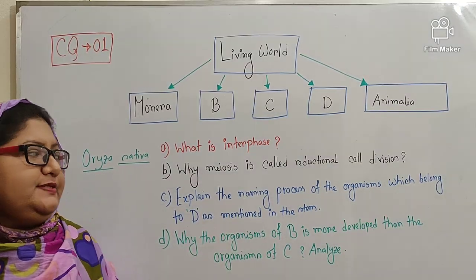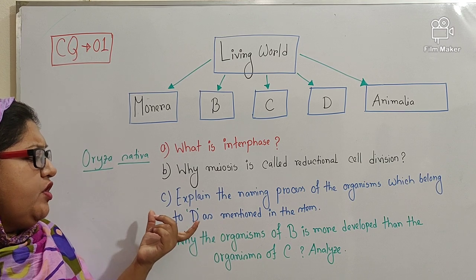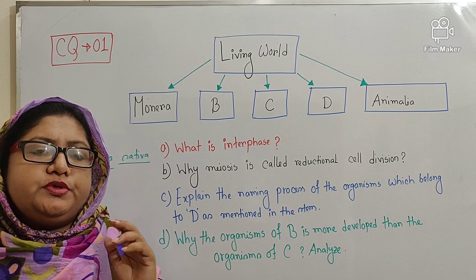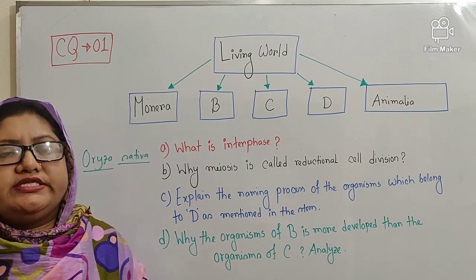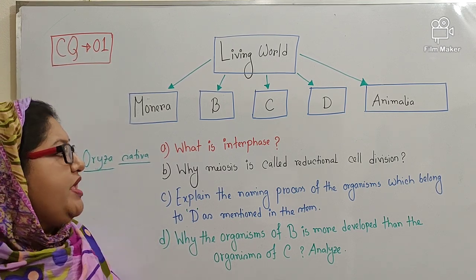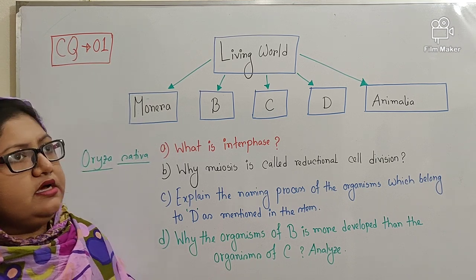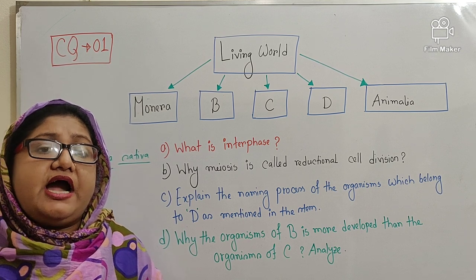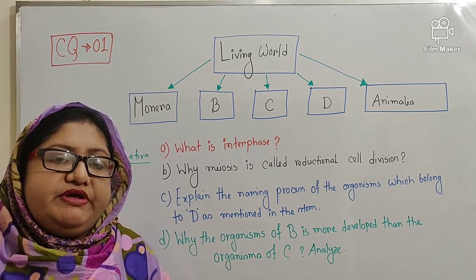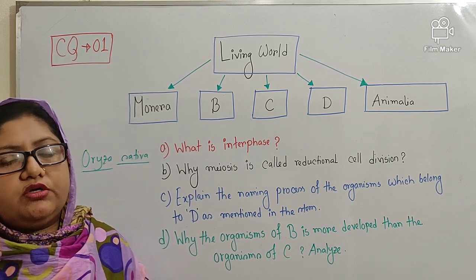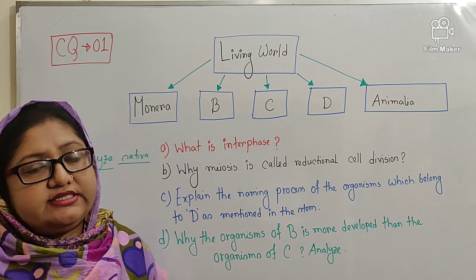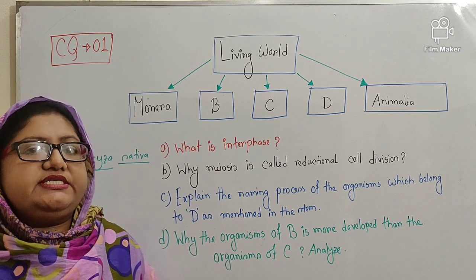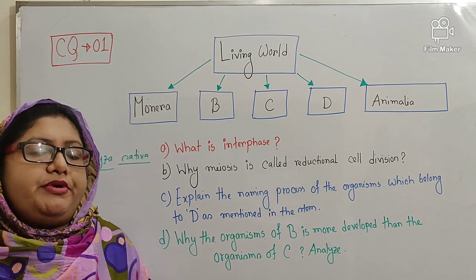Another rule is: every organism should have a unique legitimate name — a name shouldn't be used for two distinct organisms. Then the next point: if the name is given by several scientists, in that case the earliest name that is given by the first scientist will get acceptance according to the rules of priority.